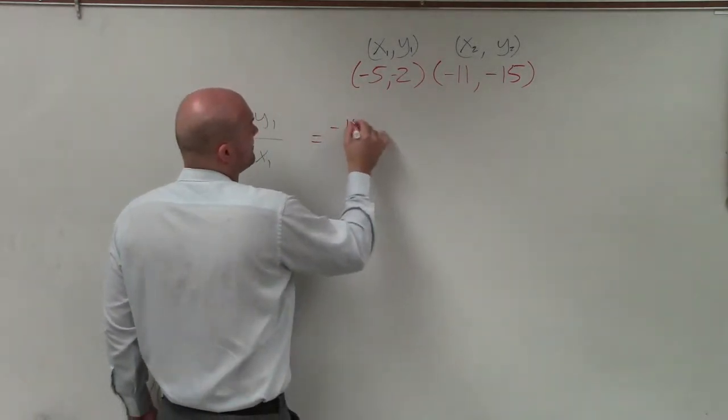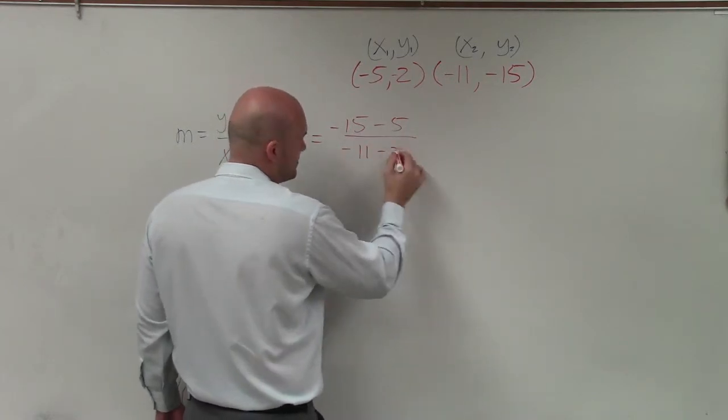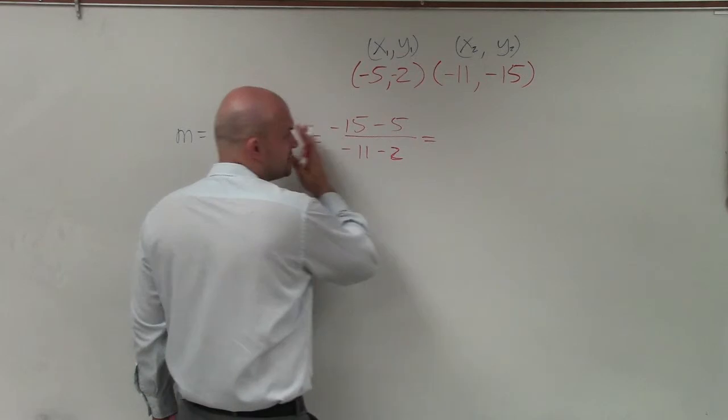So I have negative 15 minus 5 divided by negative 11 minus 2. And then I simply just subtract across.